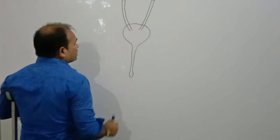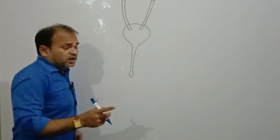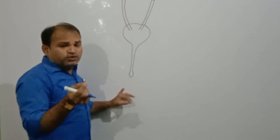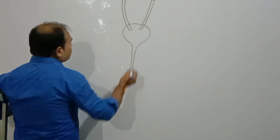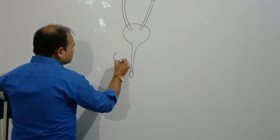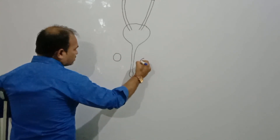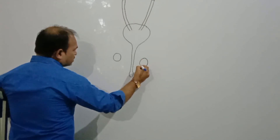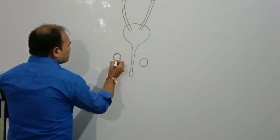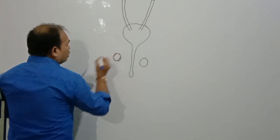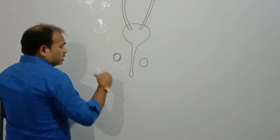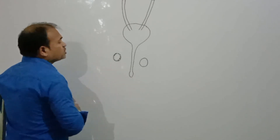Student आपको याद होना चाहिए कि male में urine भी urethra से pass हो रही है और semen भी यहीं से pass हो रहा है — दोनों का route male में एक ही है। Male का main reproductive organ जिन्हें हम testis कहते हैं — यह male का main reproductive organ है। Testis का size oval shaped होता है, और यह abdominal cavity के बाहर pelvic region में, legs के बीच में, scrotum के अंदर situated है।